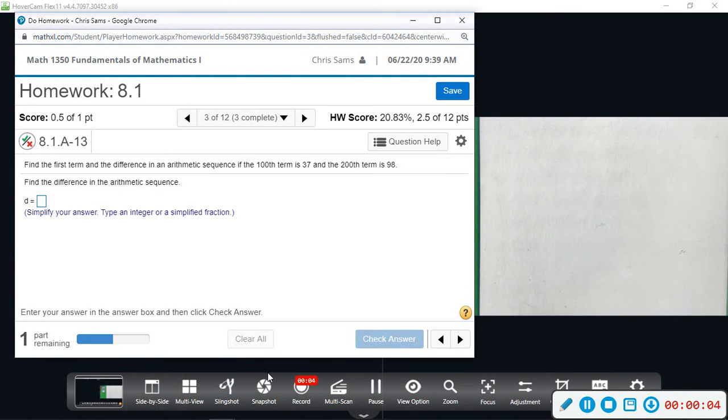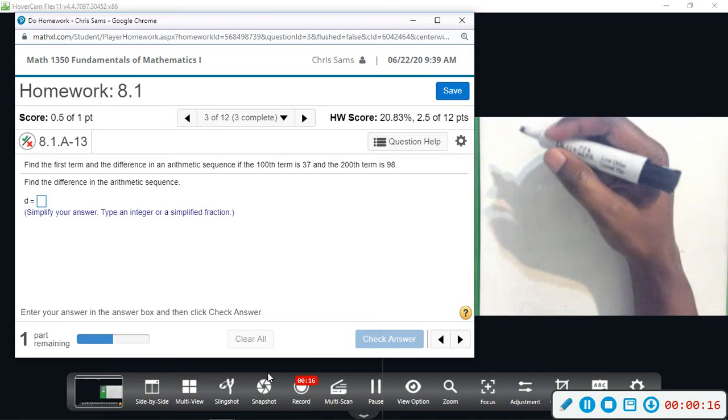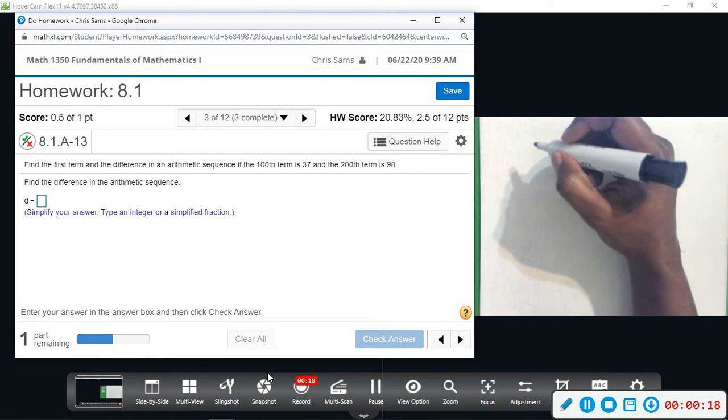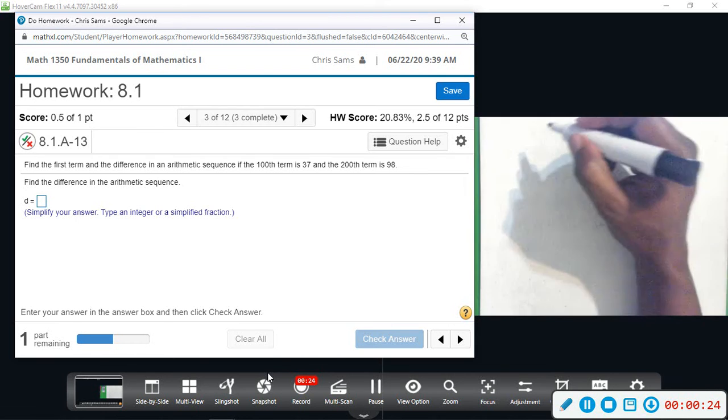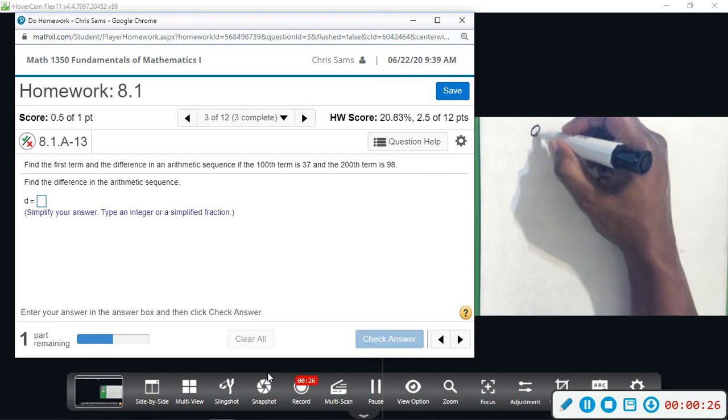Alright, 8.1 number 3. We want to find the first term and the difference in the arithmetic sequence. So we're going to find the difference first by taking these two terms. We have the 100th term is 37, the 200th term is 98, so we're going to subtract these two terms.